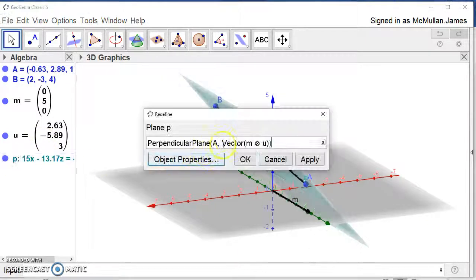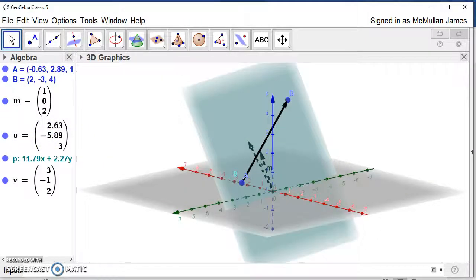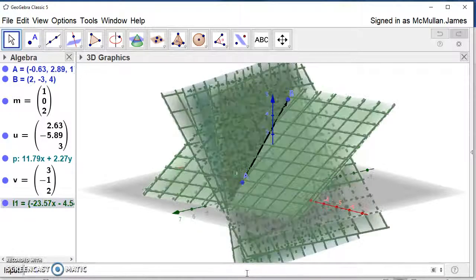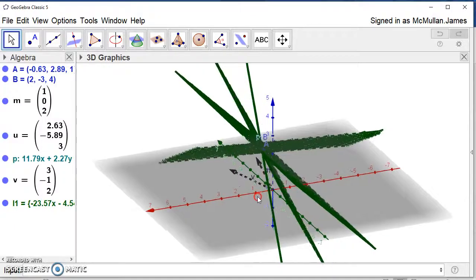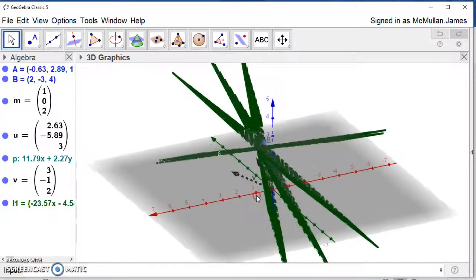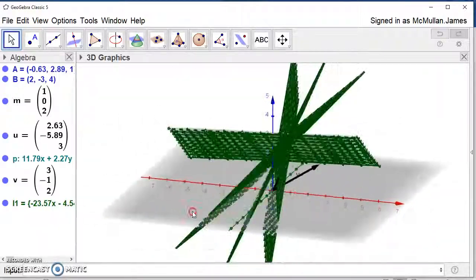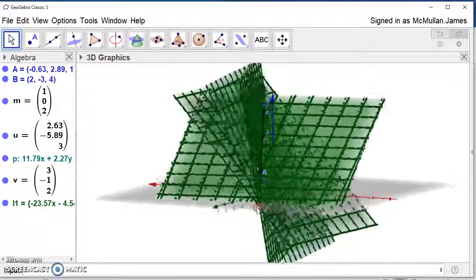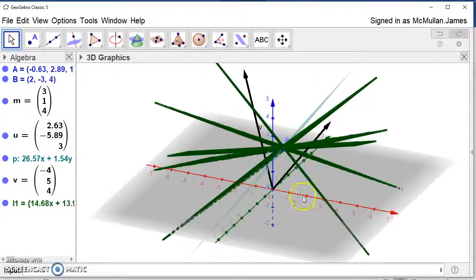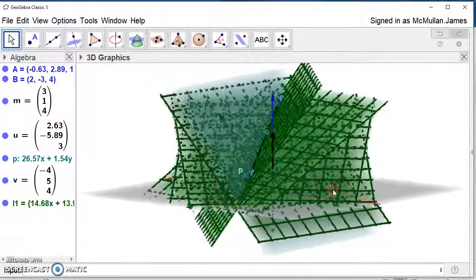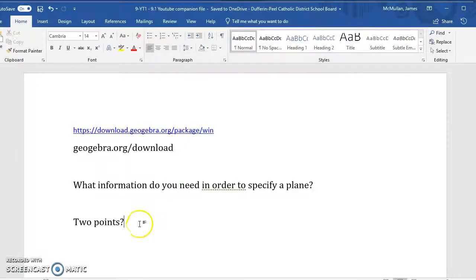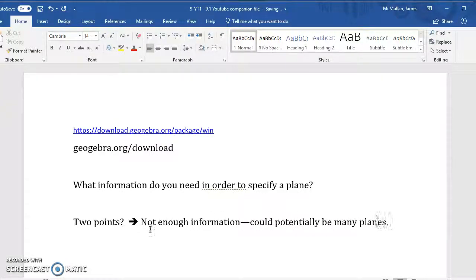Maybe what we can do here is we can just do a quick sequence that will illustrate that there are many different possible planes that contain A and B. Notice that A and B, if we look at it right from this direction, all of these planes pass through A and B. And obviously there are many different ways to hold your piece of paper that would touch both A and B. Two points is clearly not enough to specify a plane. So let's write under two points: not enough information, could potentially be many planes.